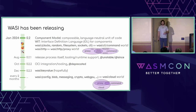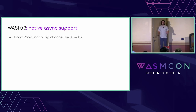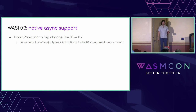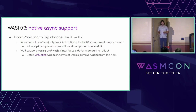Concurrently with all this work is a 0.3 release, slated for at least some time in the first half of next year. The big feature in WASI 0.3 is native async support. This is not a big breaking change like 0.1 to 0.2 was. We're talking about an incremental addition of types and ABI options to the existing 0.2 component model binary format, such that all WASI P2 components are still valid in the WASI P3 world. We'll support both WASI P2 and P3 interfaces side-by-side during rollout, and eventually virtualize WASI P2 interfaces in terms of WASI P3 to remove them from hosts, reducing our trusted computing base while keeping all existing P2 code working.